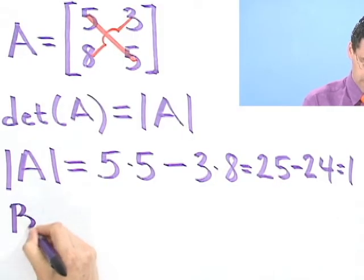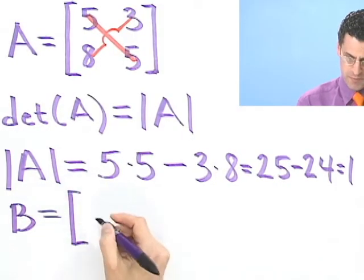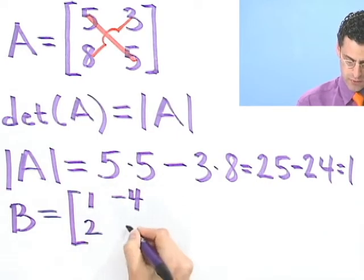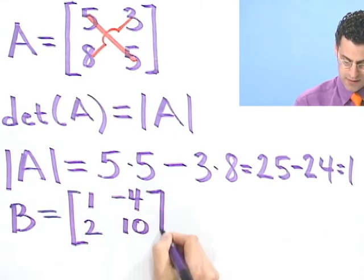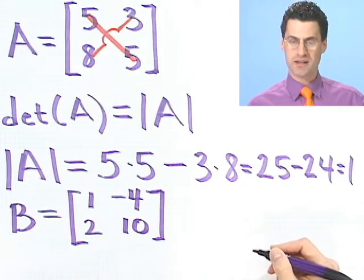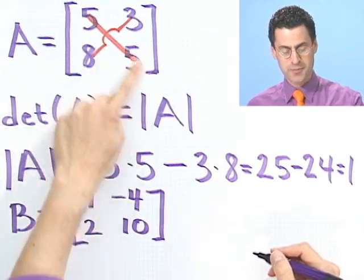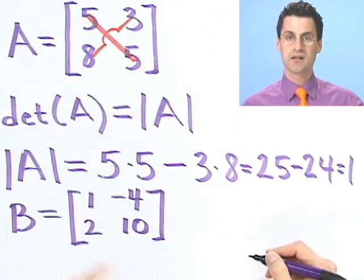But first of all, I want us to get a sense of how to compute these things. So before I tell you exactly the meaning of 1, let's just make sure we can find some of these. Let's take another example, B. Suppose B equals 1, -4, 2, 10. What's the determinant of this? Well, why don't you try it right now? Because you see the pattern, you take this product and subtract this product. See if you can find the determinant of B right now.